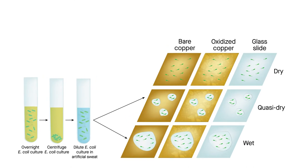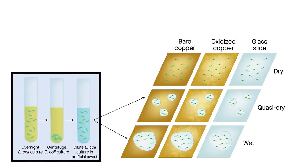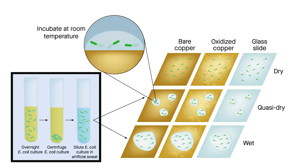Researchers simulated fingerprint contact by adding bacteria onto corroded surfaces with and without droplets of artificial sweat. The droplets formed a thin, watery layer within a few minutes and evaporated much faster than layers formed using less realistic test methods.